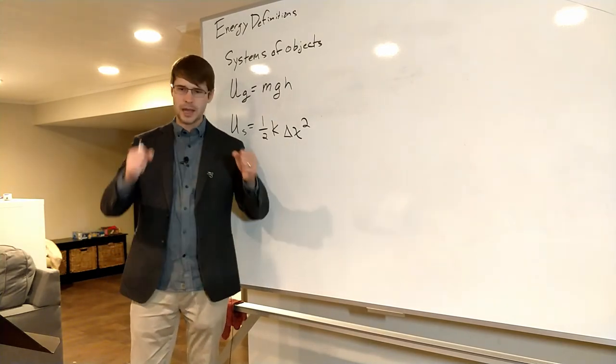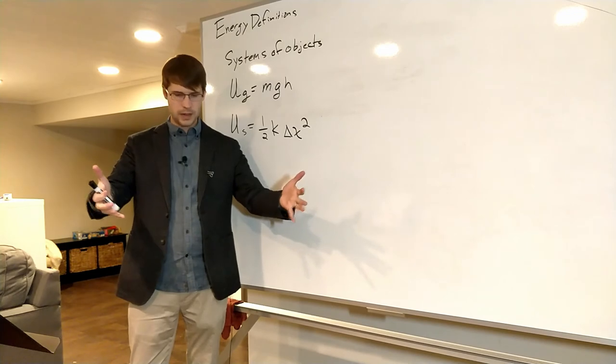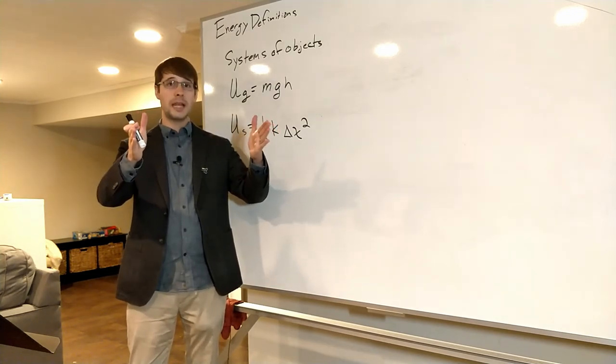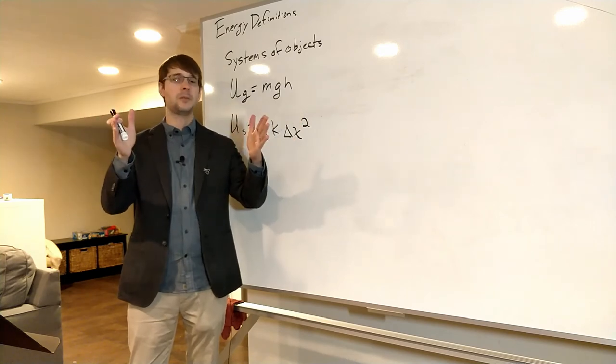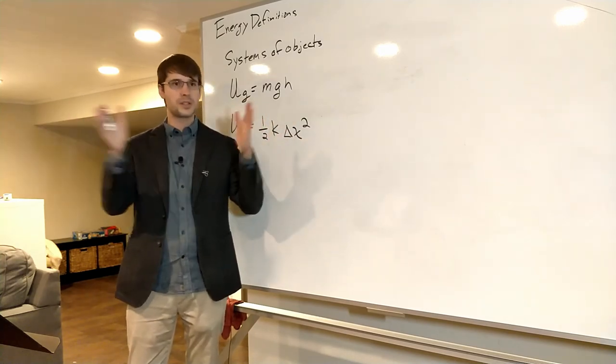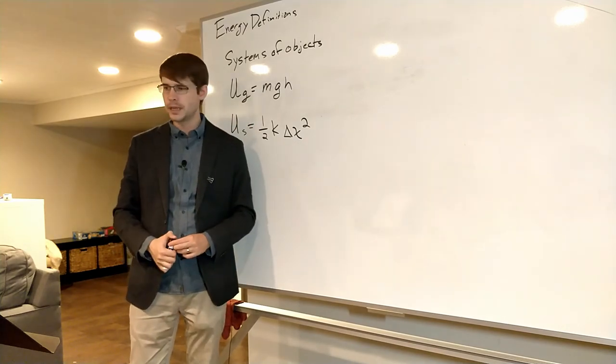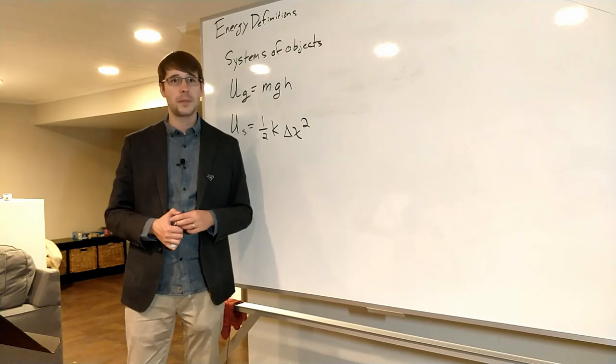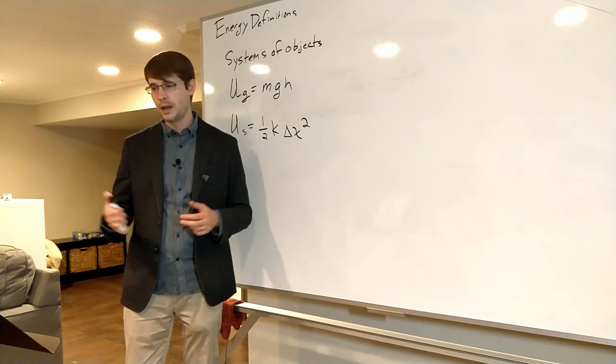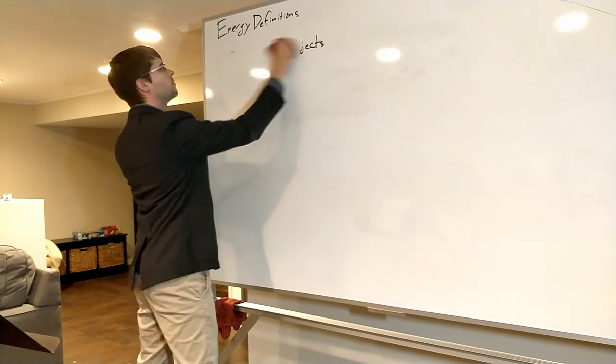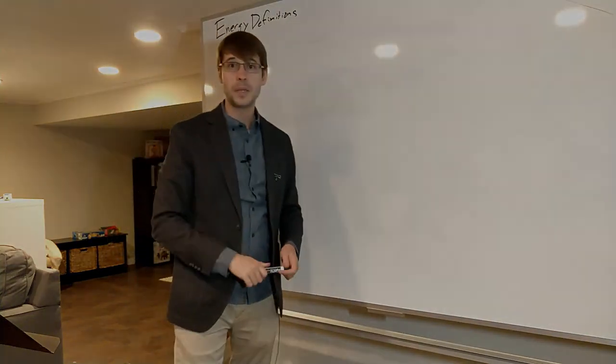And then times delta x squared. In this case, delta x is how much—if you just set the spring on the ground, let it be on its own where it would be—that's how much you've changed it, how much its length has changed, either by stretching it or squishing it. You just plug it in and that calculates for you. The last thing I want to talk about is the conservation of energy. That'll be in a different video.